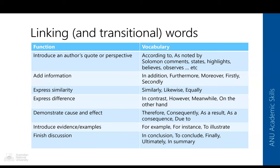There are a number of ways to incorporate someone else's voice and quote into your writing. Use phrases like 'according to,' 'as noted by,' 'the author comments,' 'states,' 'highlights,' 'believes,' 'observes,' 'argues,' and so on. Additionally, there are linking and transitional words you can use in your paragraphing: words to add information such as 'in addition' and 'furthermore'; to express similarities such as 'likewise' and 'similarly'; to express difference such as 'however' and 'in contrast'; to show cause and effect such as 'therefore,' 'consequently,' and 'as a result'; to introduce examples such as 'for instance' and 'for example'; and to wrap a discussion such as 'in conclusion,' 'to conclude,' 'finally,' and 'ultimately.' Think of these words as the glue that holds a paragraph together, or traffic lights that tell the reader when to stop, slow down, turn right, or turn left.